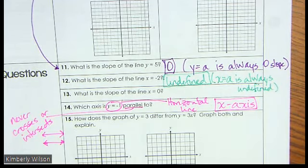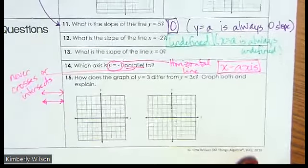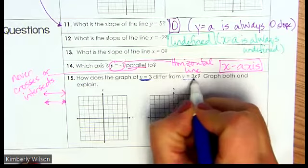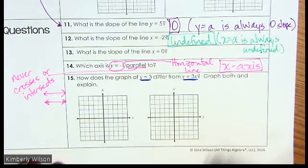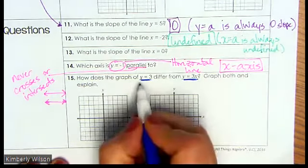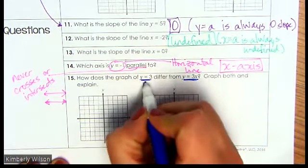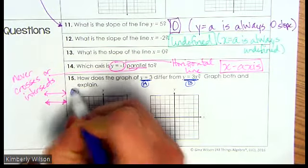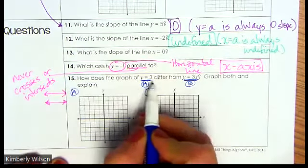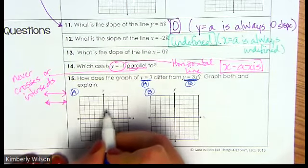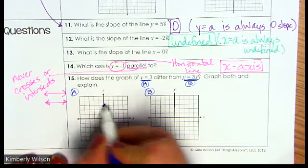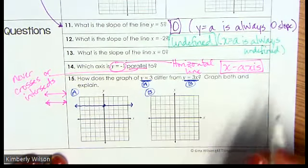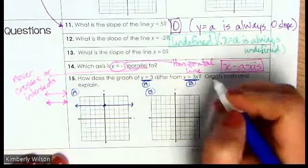Last thing — let's look at the difference between y equals 3 and y equals 3x. We've got to graph each of these. We'll call this graph A and this graph B. Y equals 3: that's crossing the y-axis at 3, so that's a horizontal line. Next, y equals 3x — that means my slope is 3 over 1 and my y-intercept is zero.